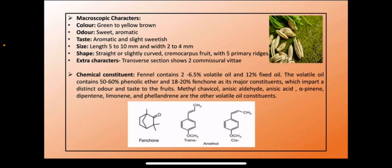Macroscopic characteristics of fennel: the fruits are green to yellow-brown in color, sweet odor, aromatic in taste and slightly sweetish. Size: length of the fennel fruit is 5 to 10 mm and width 2 to 4 mm. They are straight and slightly curved cremocarpus fruit with 5 primary ridges. The transverse section shows two commissural vittae.